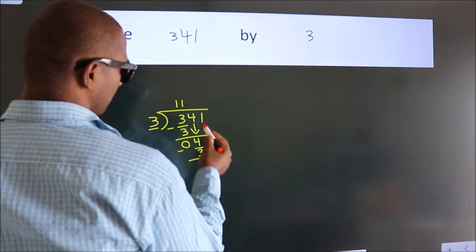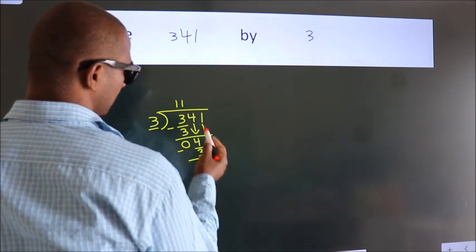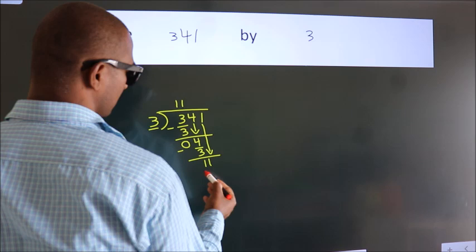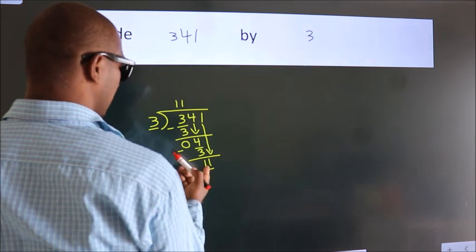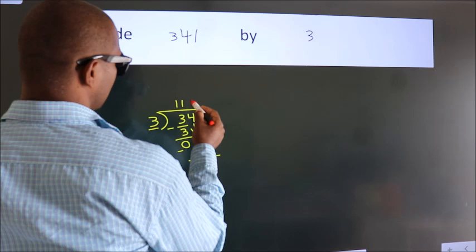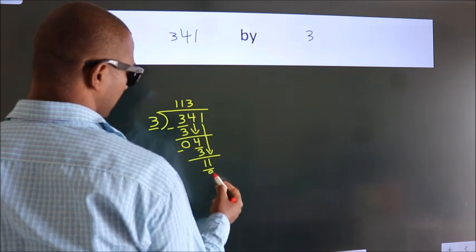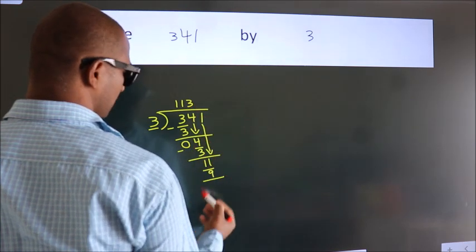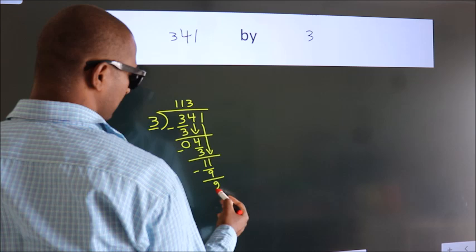After this, bring down the beside number, so 1 down, so 11. A number close to 11. In 3 table is 3 threes, 9. Now, we subtract, we get 2.